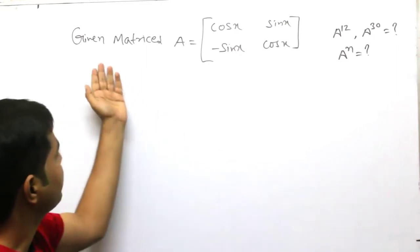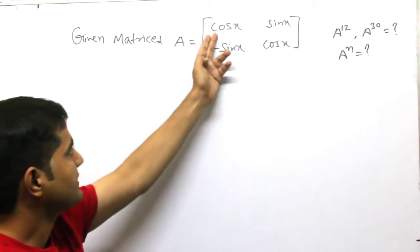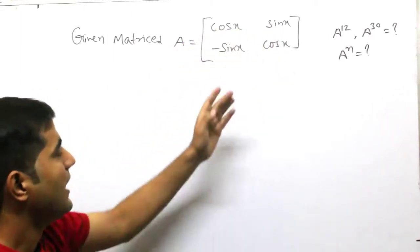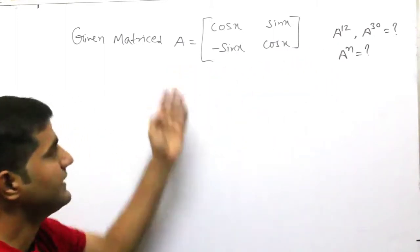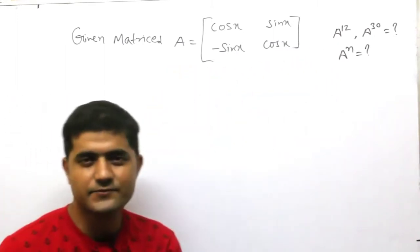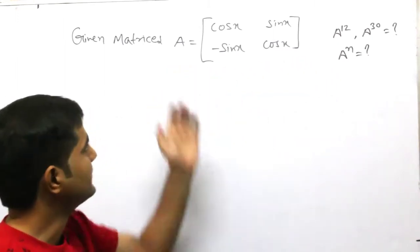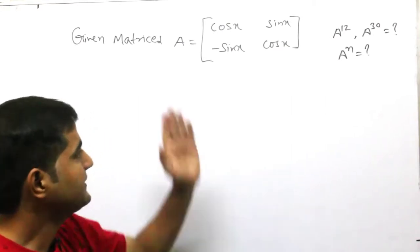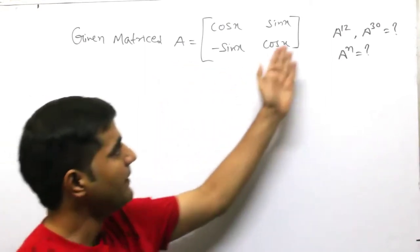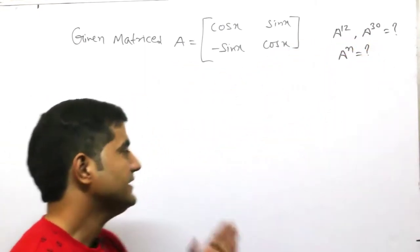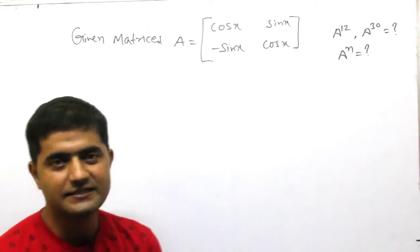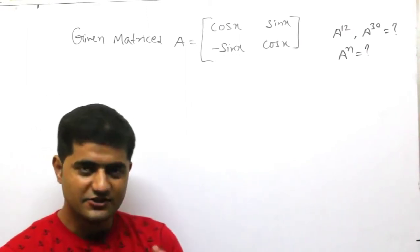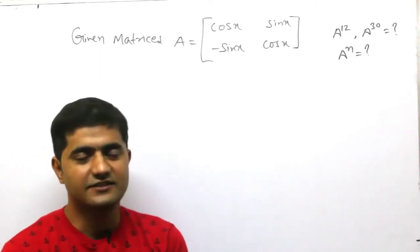Given matrix A equals to [[cos x, sin x], [-sin x, cos x]], then we will take a higher power of A. If A square or A cube is done, we will solve it in 2-3 steps. But when A power 12, A power 30, A power n — these values we need to find out.